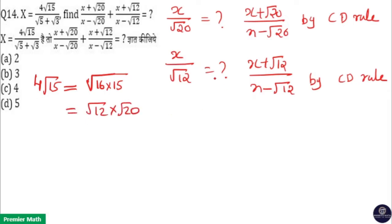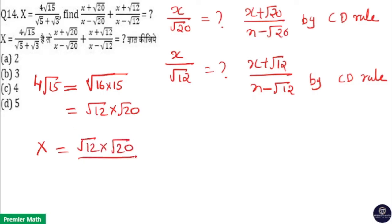Now we need to find x/√20 and x/√12. Here x equals 4√15, which is √12 × √20. So x divided by √20 equals √12 × √20 divided by √20 divided by (√5 + √3).